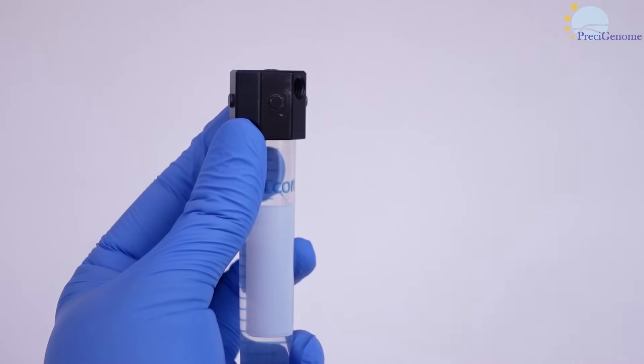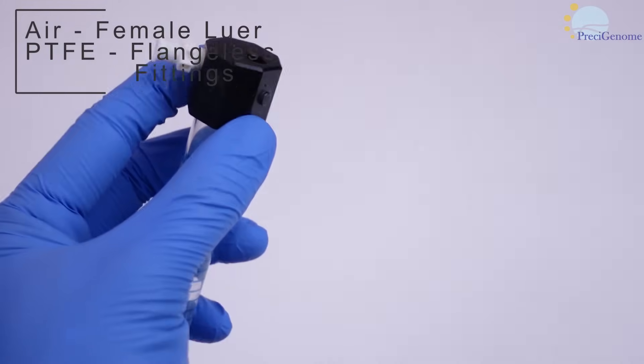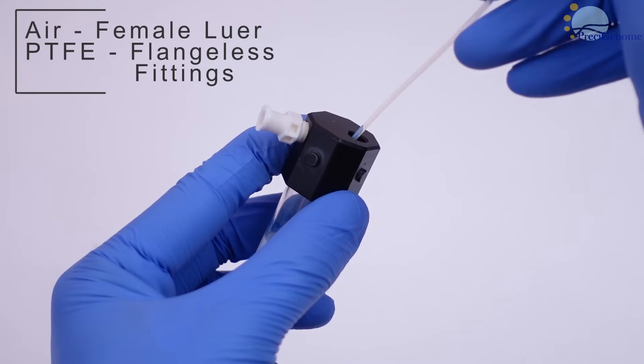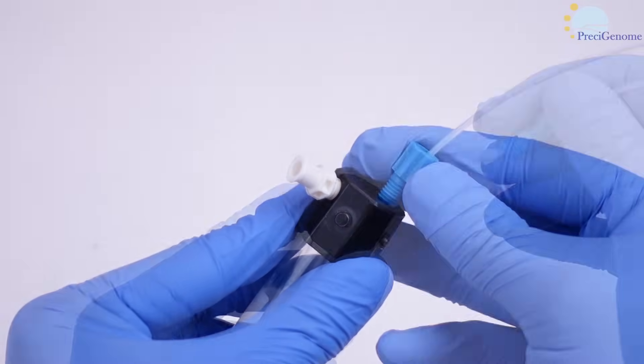The air tubing connects with the female luer adapter, while the PTFE tubing requires flangeless fittings to connect to the cap. These should be combined with ferrules to ensure a proper seal.